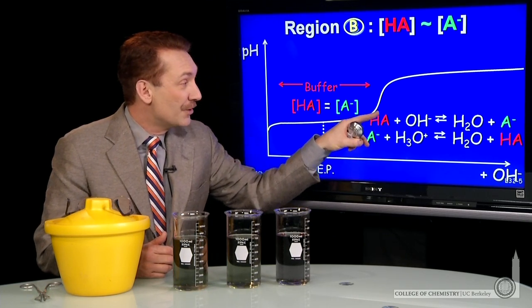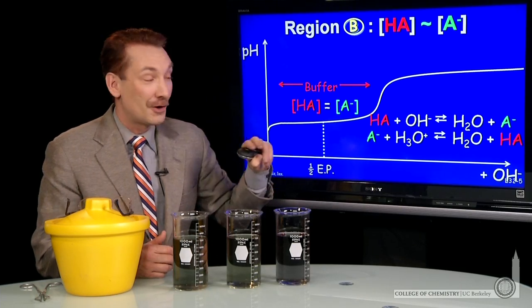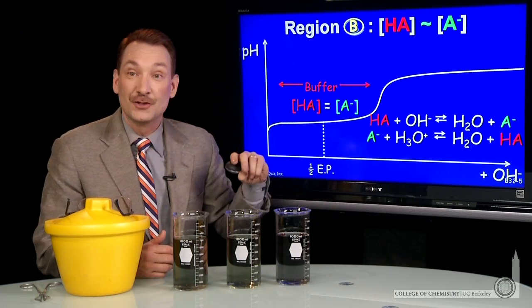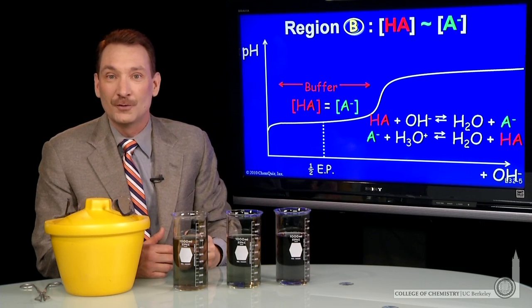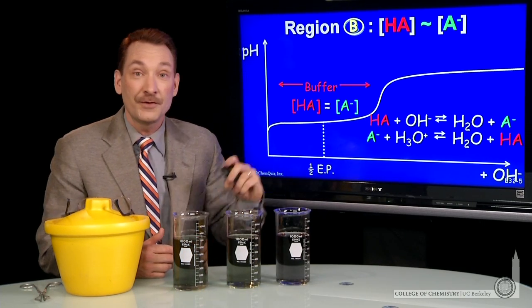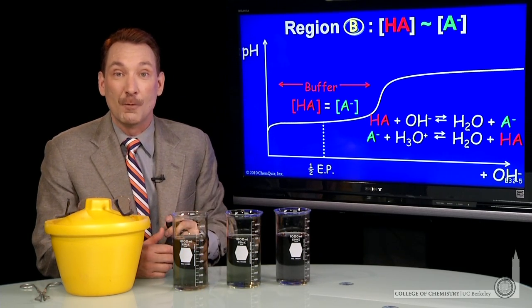Both of these reactions—the weak acid consuming the strong base and the weak base consuming the strong acid—lie strongly towards the products. The K for both of these reactions is much greater than 1.